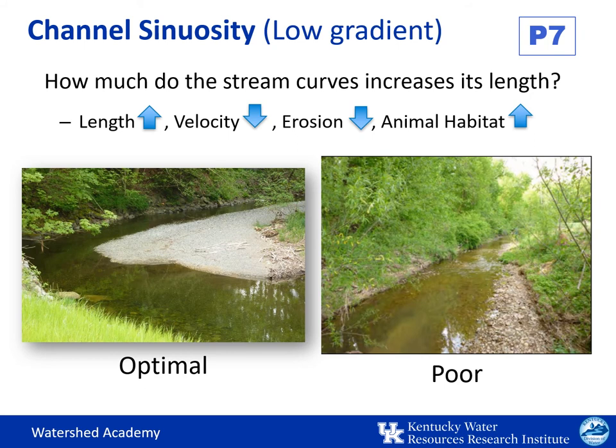For low gradient streams, you'll consider channel sinuosity instead of riffle frequency. This parameter characterizes the meandering or sinuosity of the stream. Curves or bends in the stream increase stream length, which reduces the force or energy of flows, also reducing erosion and improving stream habitat. A high degree of sinuosity provides better habitat and fauna, and the stream is better able to handle storm surges. Straightened channels do the opposite, increasing flow velocity and erosion and damaging stream habitat.